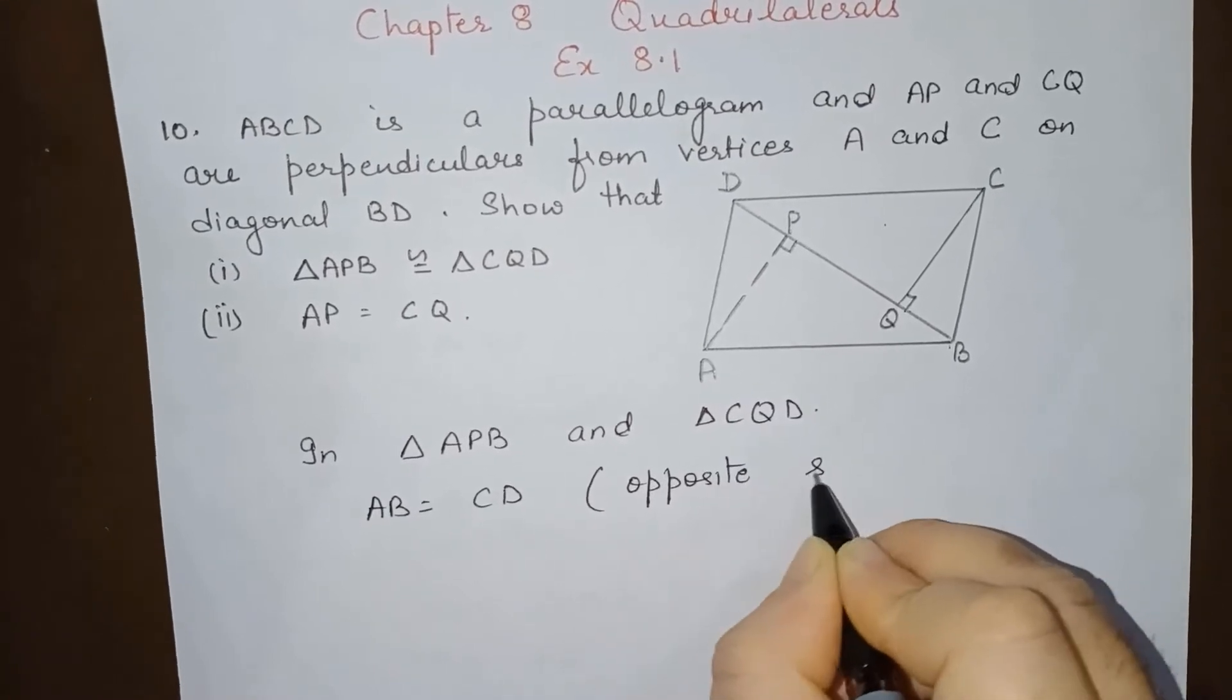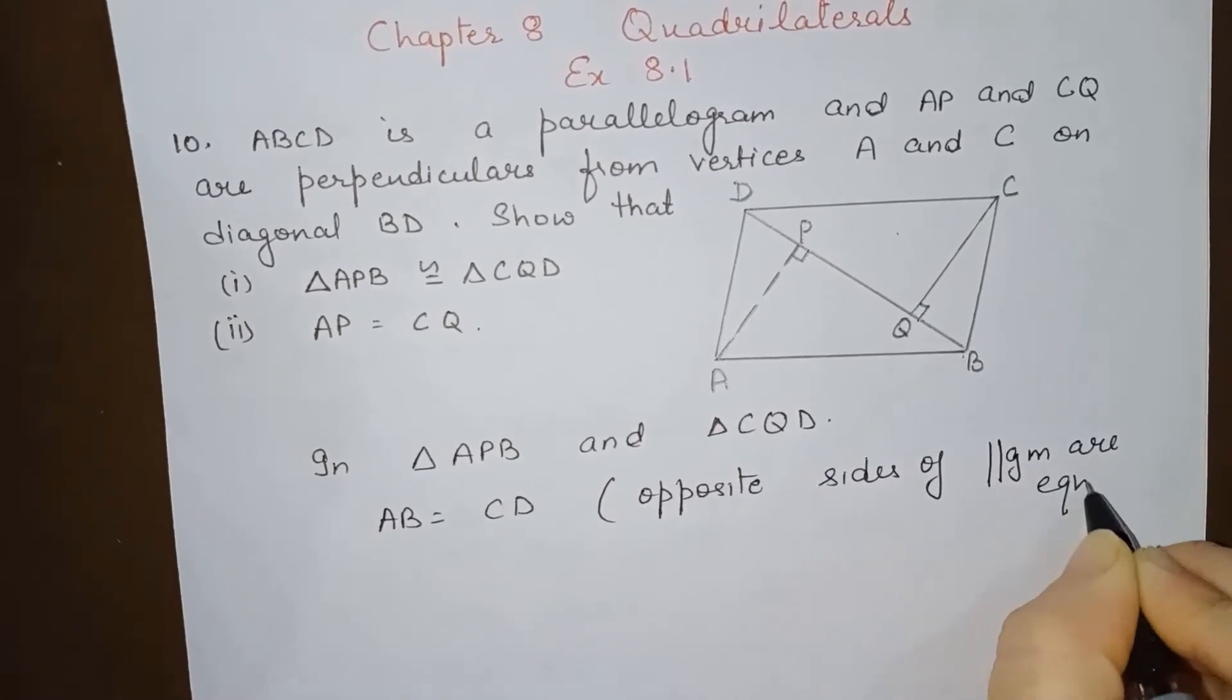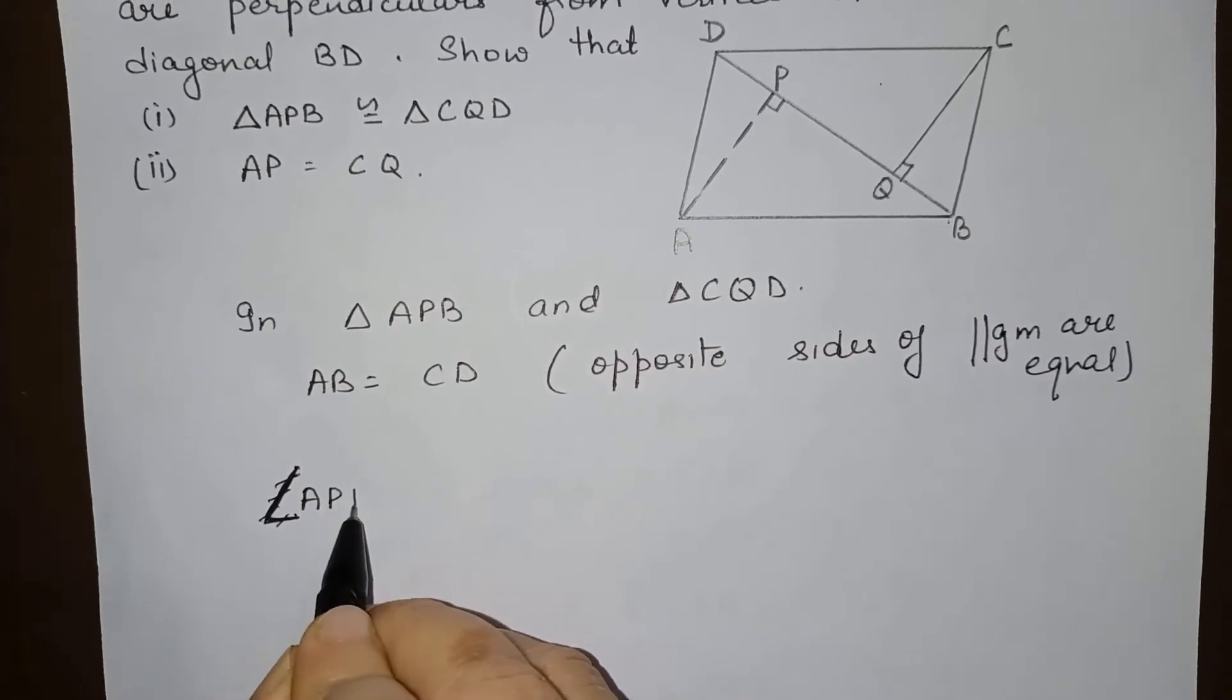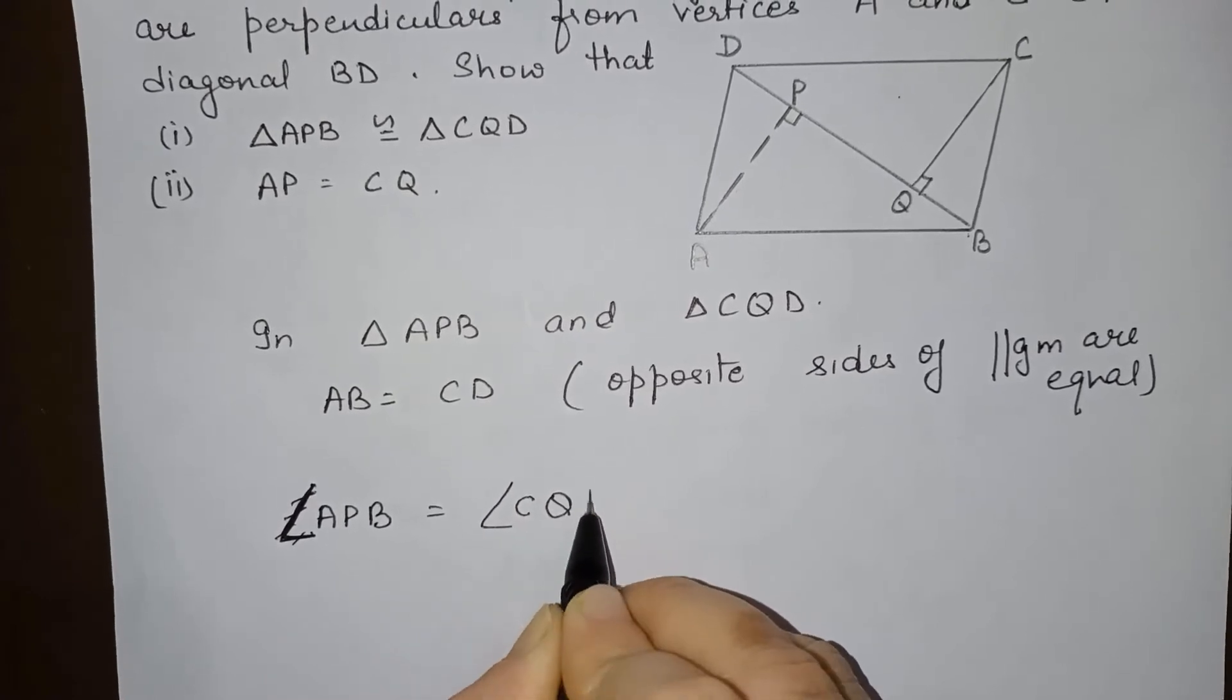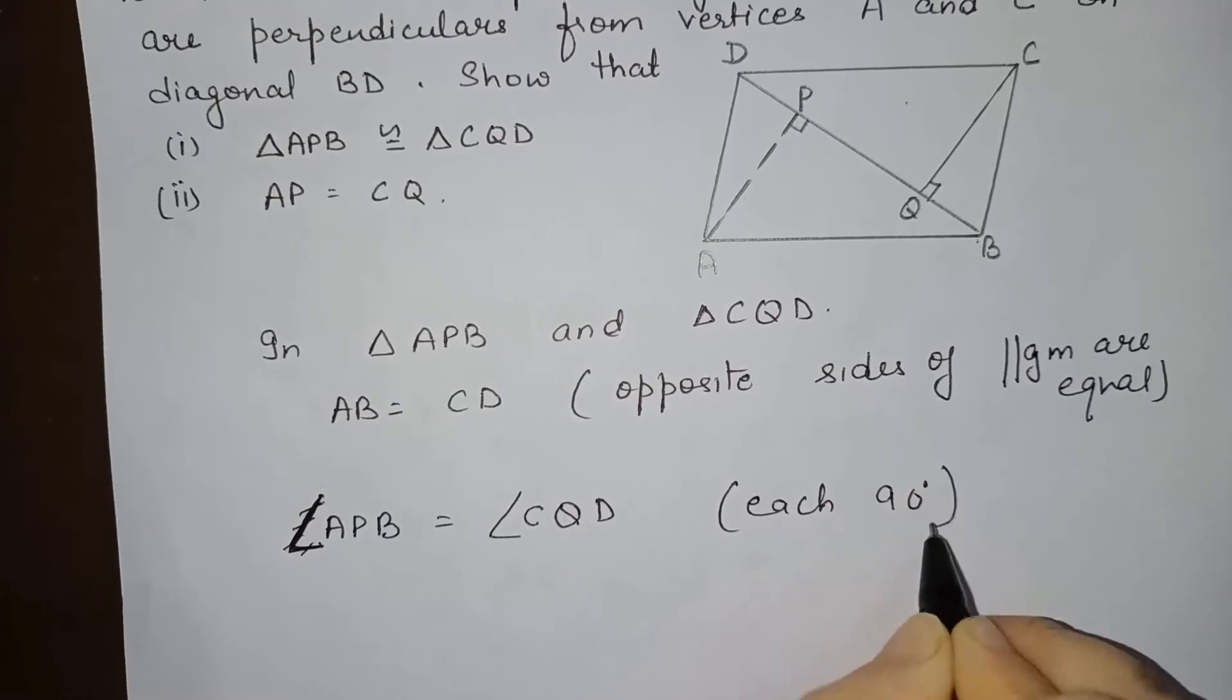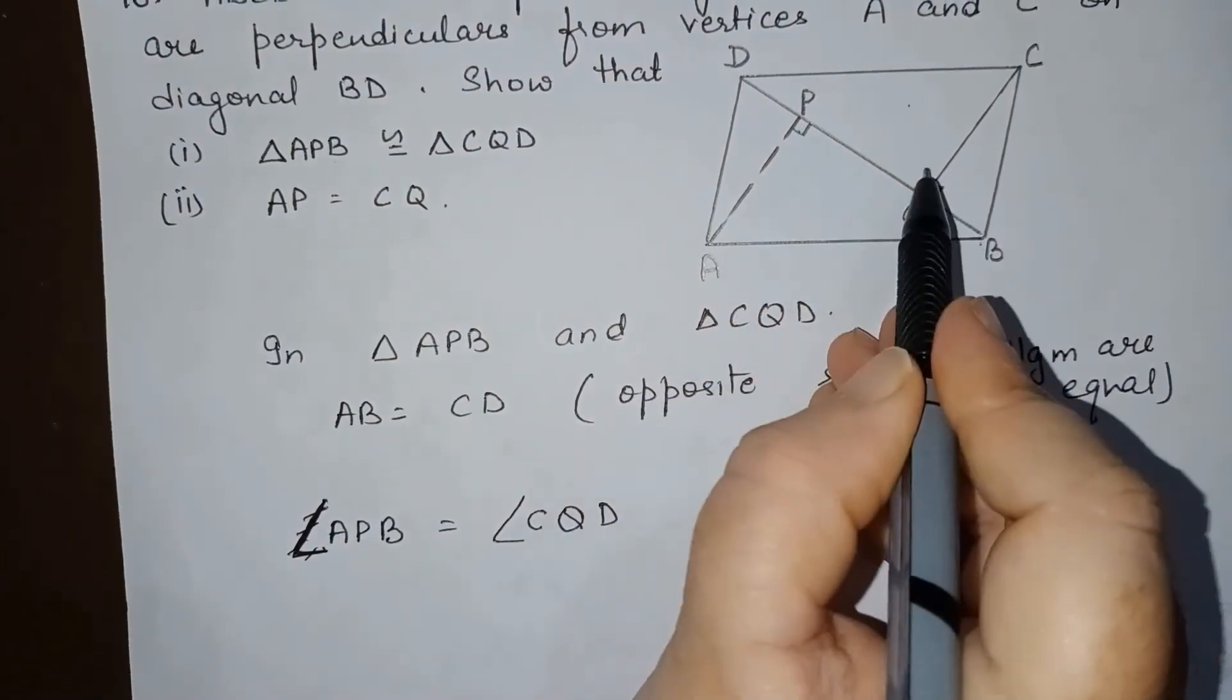Next we can write angle APB is equal to angle CQD, each 90 degrees, as AP is perpendicular to BD and CQ is also perpendicular on BD. So these two angles we can say are 90 degrees.